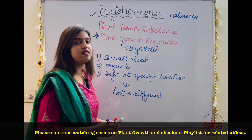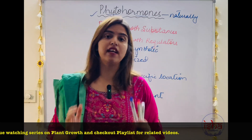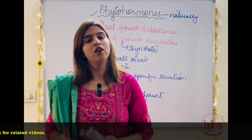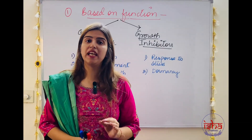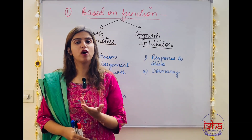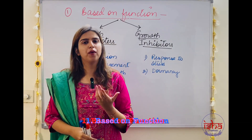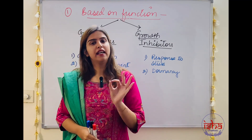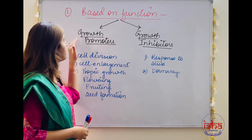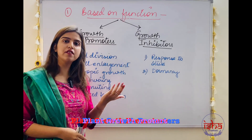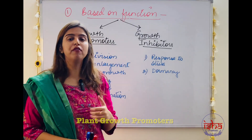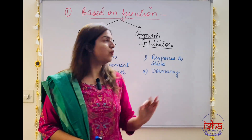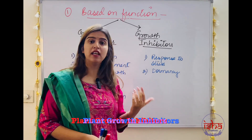To make the study easy, we have classified phytohormones on several parameters. The first classification is based on the function these phytohormones perform. One function could be promoting plant growth — in this case they are known as plant growth promoters. The second function could be inhibiting or stopping plant growth — in that case they are known as plant growth inhibitors.